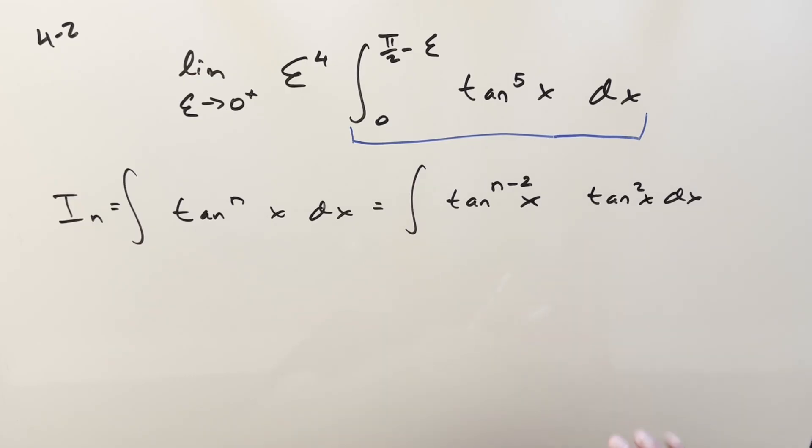So for tan squared of x, we can use the identity on this and write this as secant squared x minus 1. But then breaking it up, I can distribute this term in and create two integrals with it.